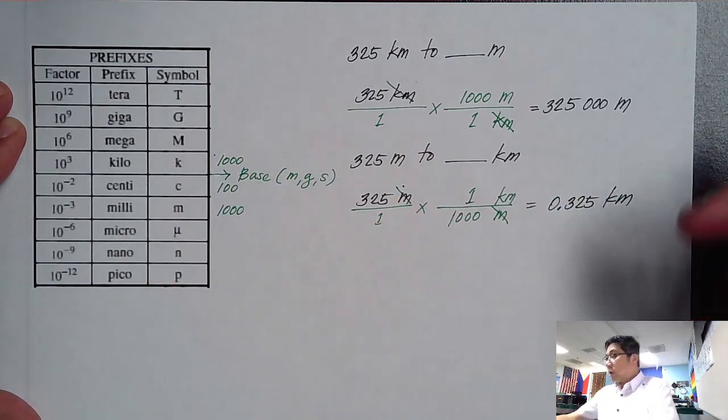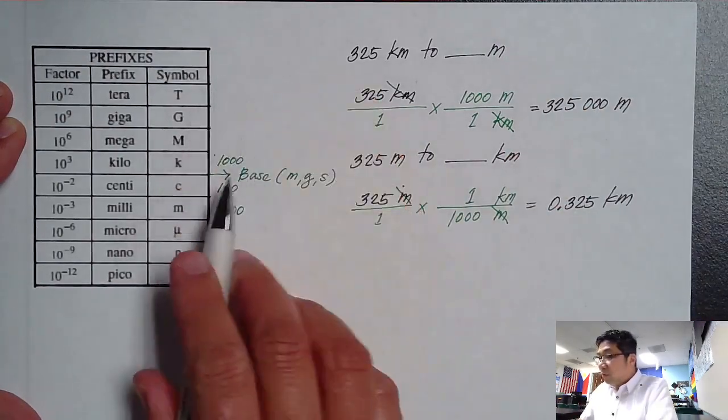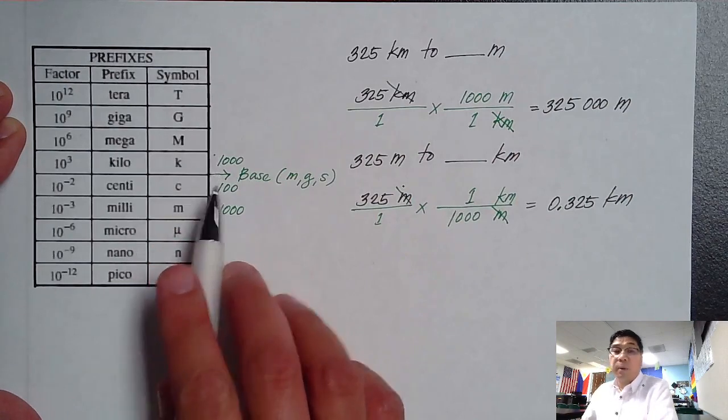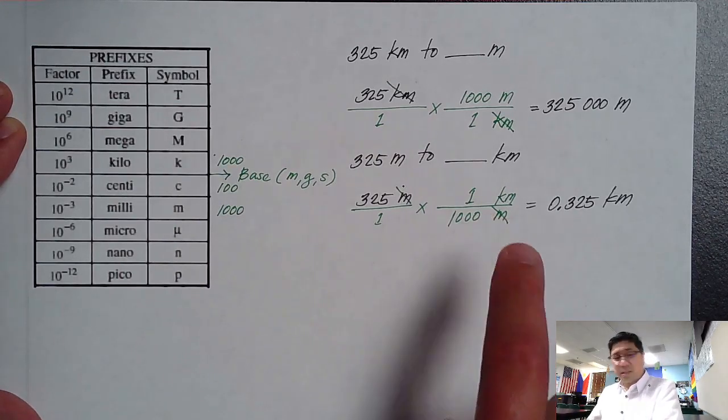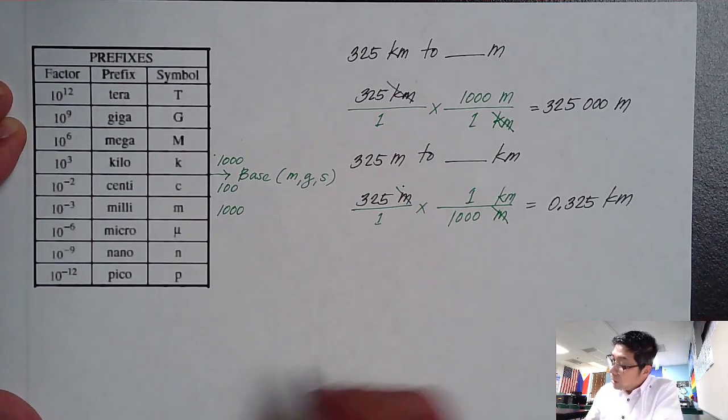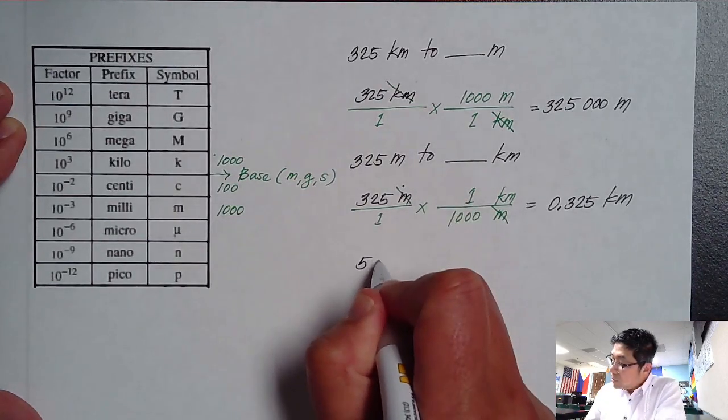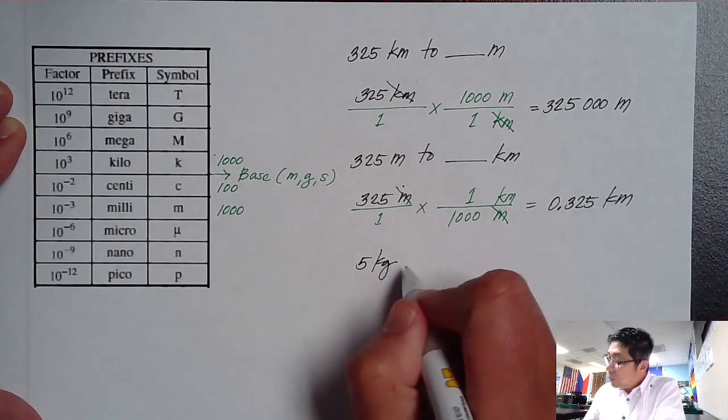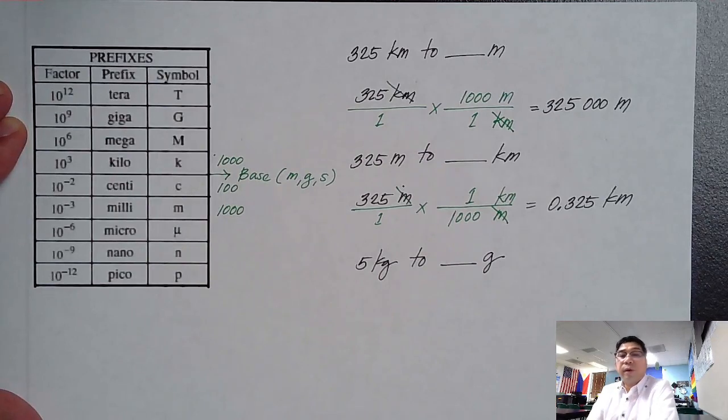So this is how you convert if you are going above from the base or towards the base above the base. Now, does this also work with kilograms? Well, that's a base, so let's use it. For example, what if I have a conversion of 5 kilograms and I want to convert this in terms of grams?